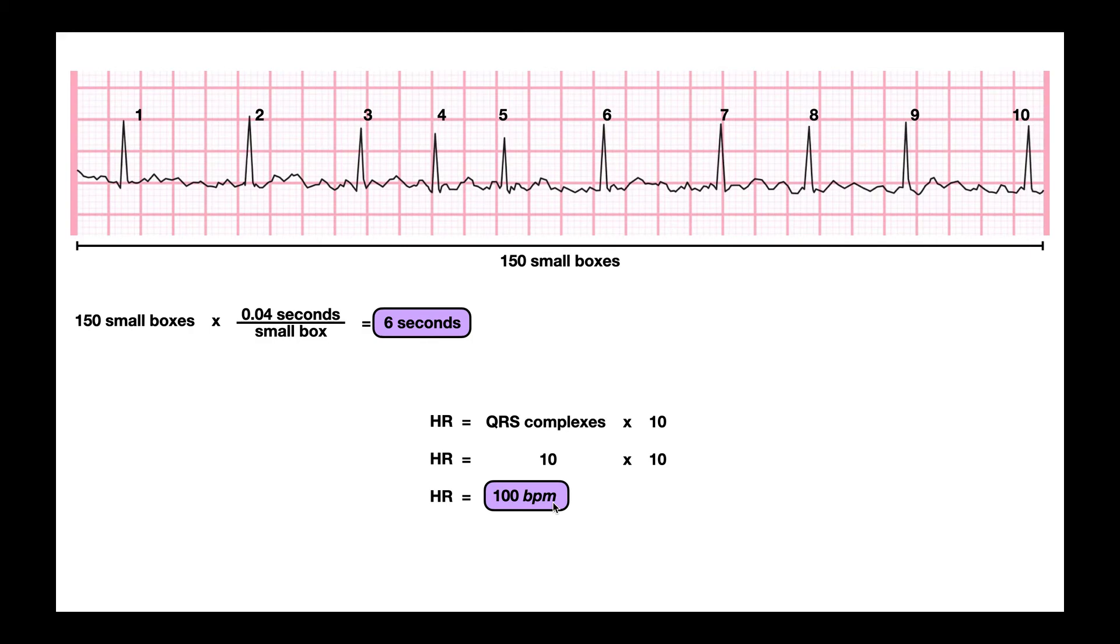Now you'll notice I said average heart rate. Why is it an average? Because each one of these RR intervals is going to have a different heart rate. It's irregular. So I have to take a composite or an average over the course of this entire 6 seconds.